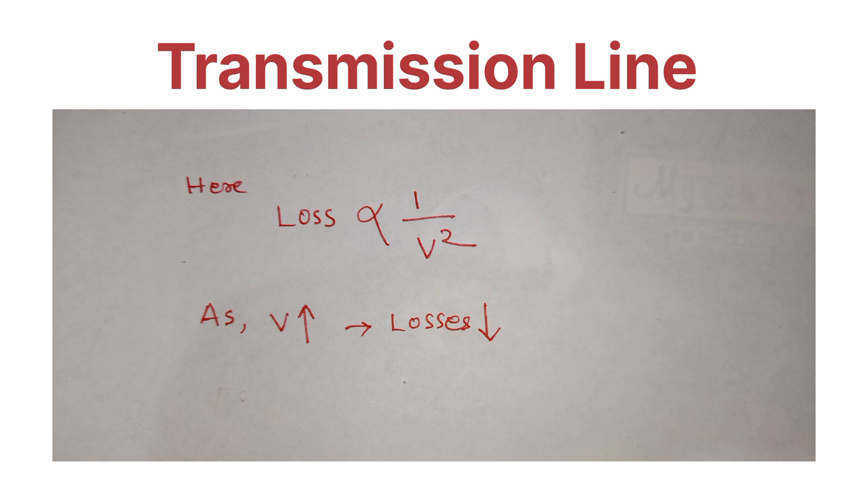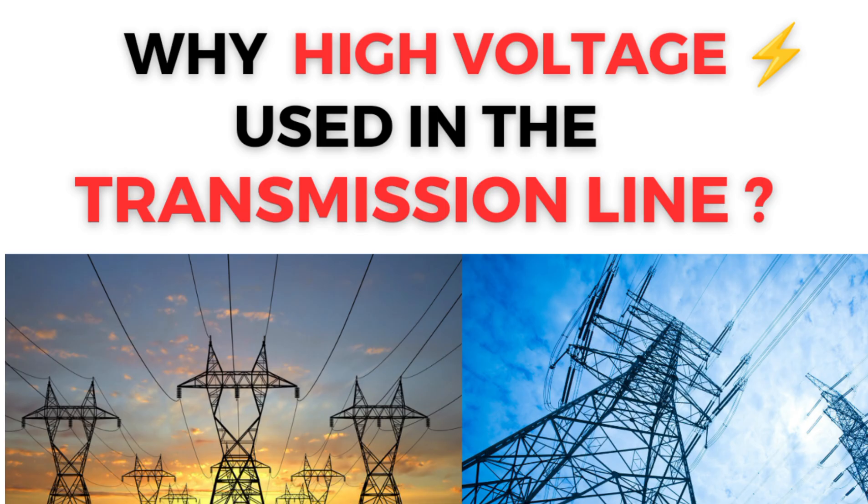As increase in voltage, losses will decrease. That's why we are using high voltage for the transmission line. This is the main reason to use high voltage in the transmission line for power transmission.